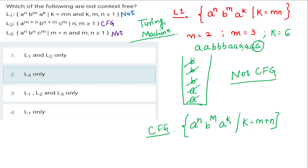If in L1 the exponent k were equal to m+n instead of m×n, then it would have been a CFG. But since k = m×n, it is not a CFG. That is the complete solution for these three problems.